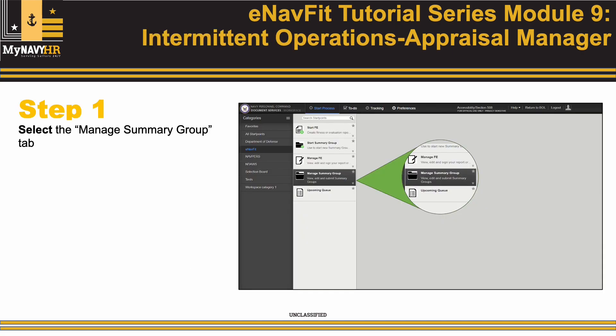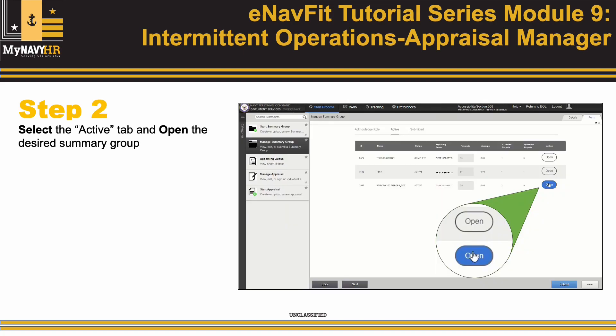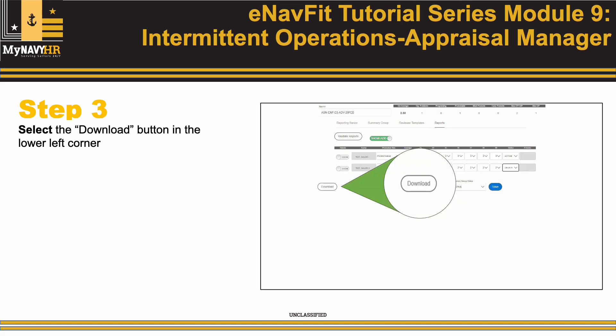Step 1: Select the Manage Summary Group tab. Step 2: Select the Active tab and open the desired Summary Group. Step 3: Select the Download button in the lower left corner.